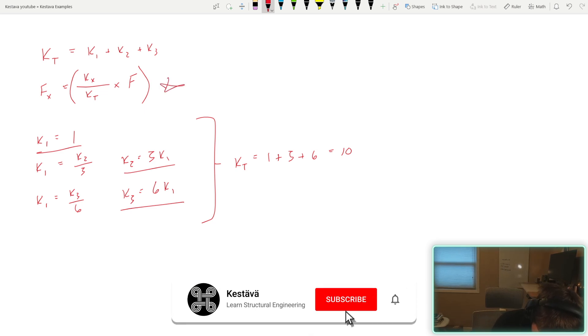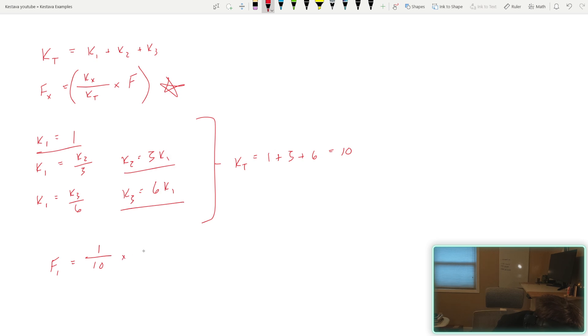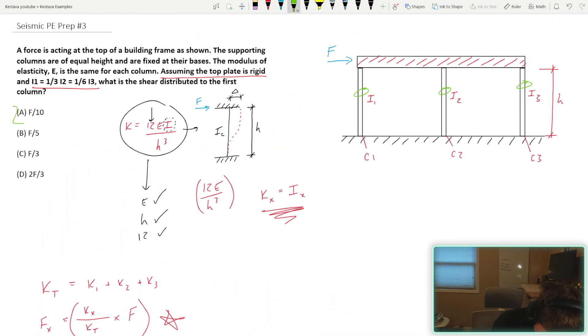And now we can use this equation to find our final answer. F1 is equal to KX in question. So K1, which is just one, over K total, which is 10, times a story force F, which gets us F over 10 as our final answer. So one tenth of the story force is going to be distributed to column one to take that story demand down to the base through that column. I'm going to say today that means our answer is A.